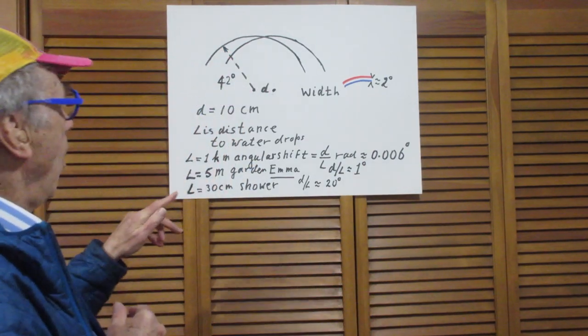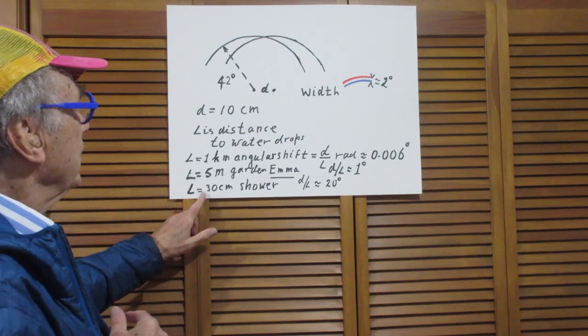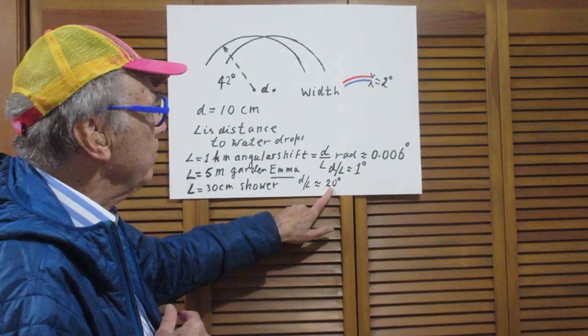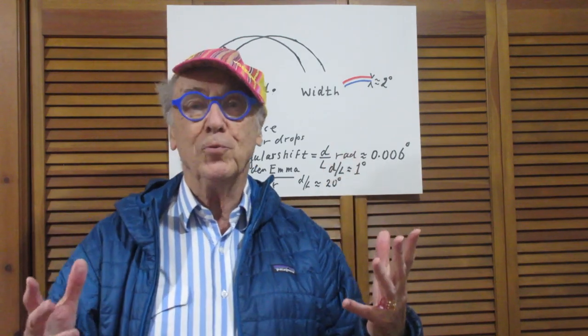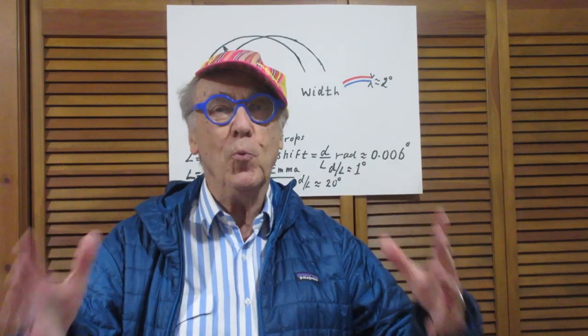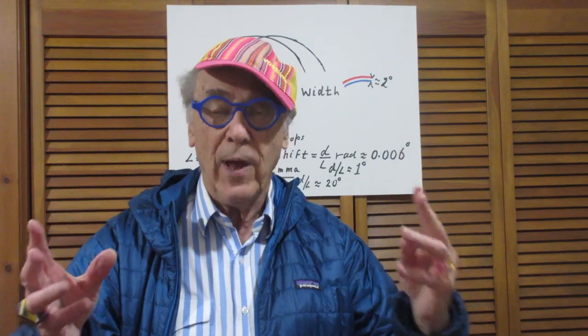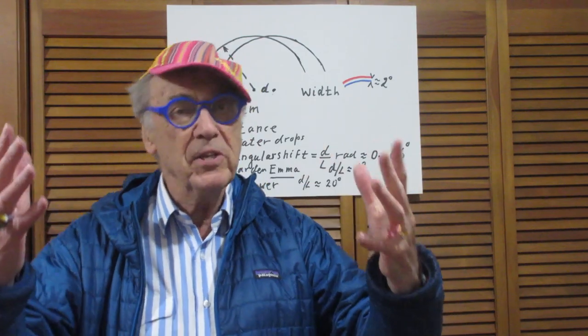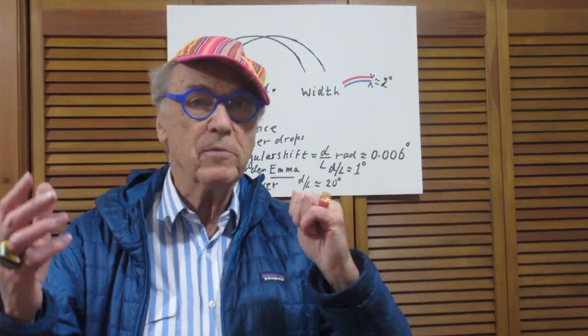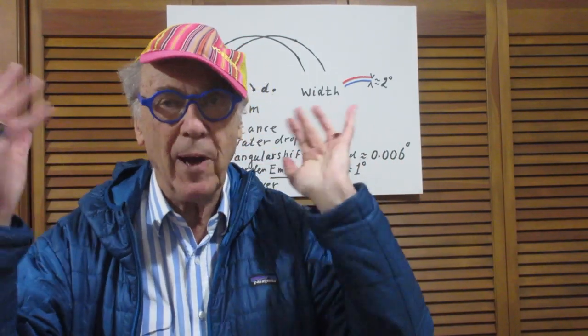Because if I go one meter, which is three times this, then the displacement would still be seven degrees. So the answer to the problem is, how can I see two primary bows? What should Emma do or what should I do? Emma should come closer to me at a distance maybe one meter with the rain, or I should move to Emma.